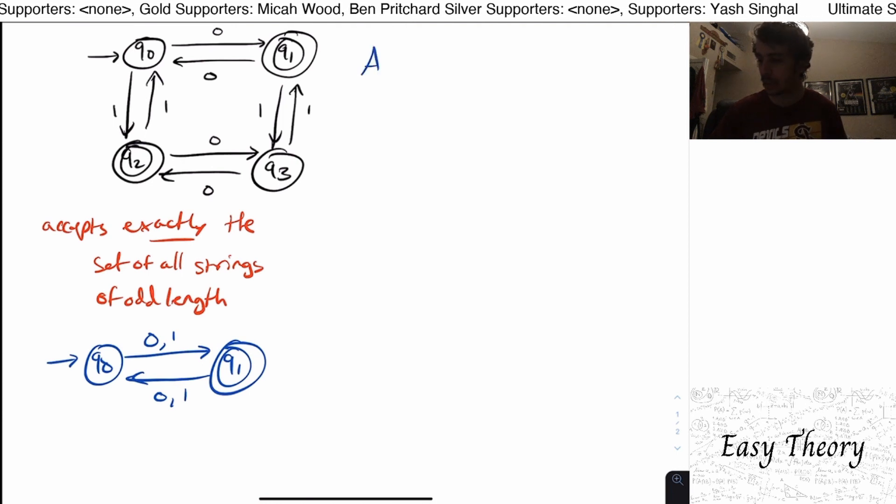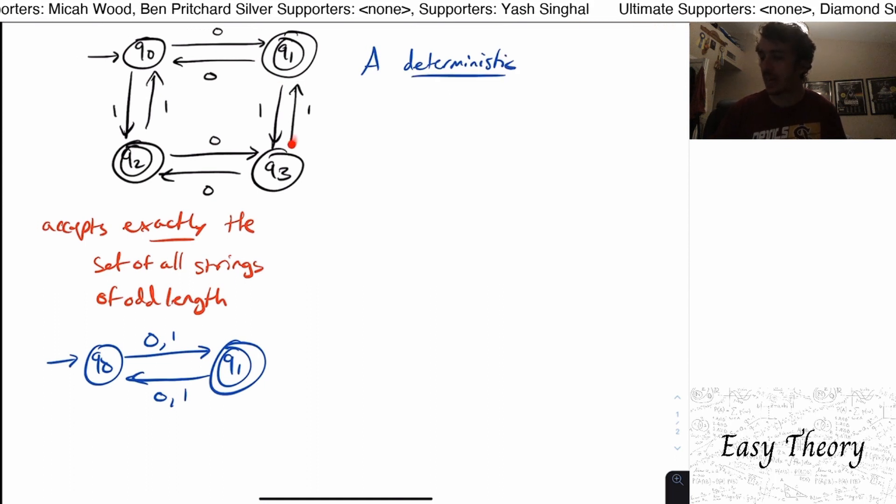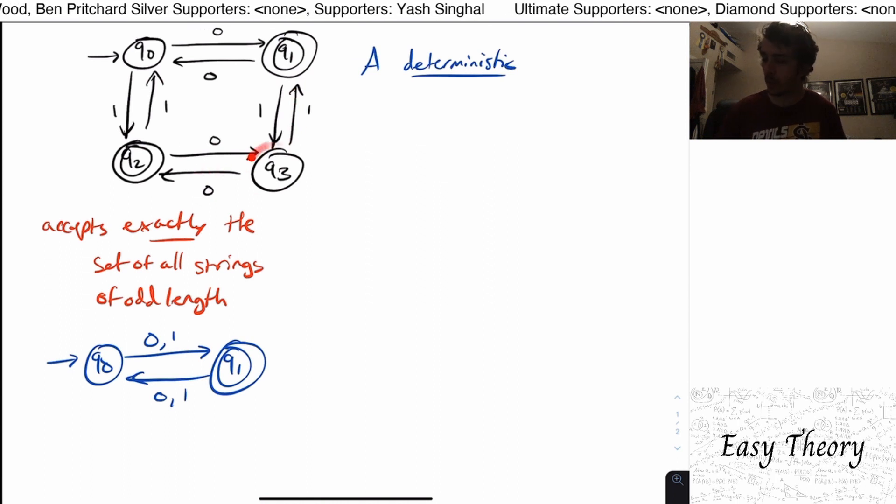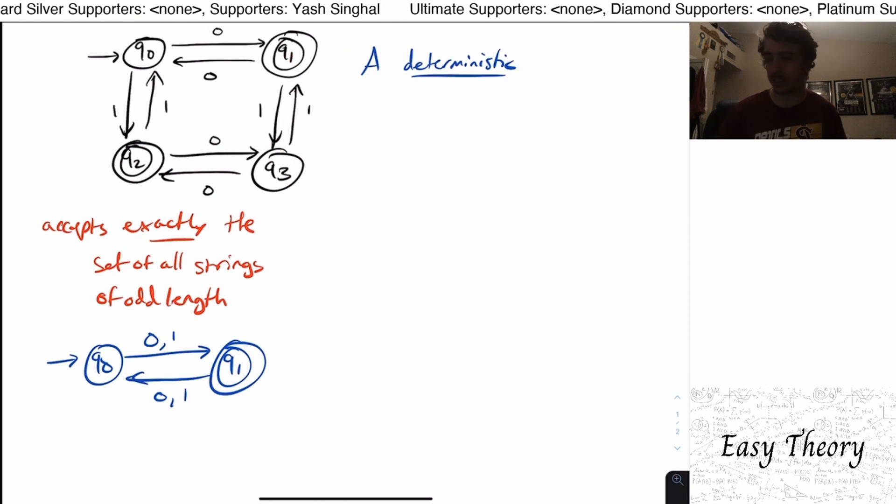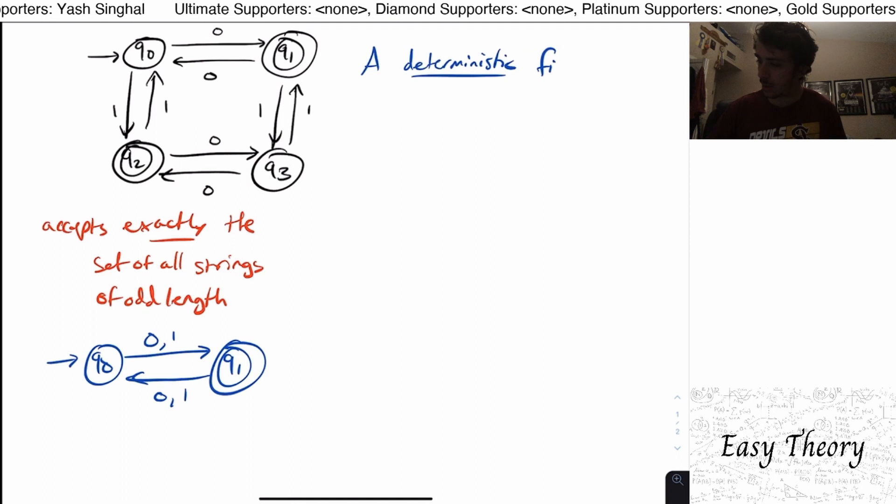And what is that? It's called a deterministic. So the deterministic comes from the fact that every state has every possible output on it. So for in Q3, for example, there is a zero and a one transition. And there's no two transitions with zero on it, there's exactly one of each character.